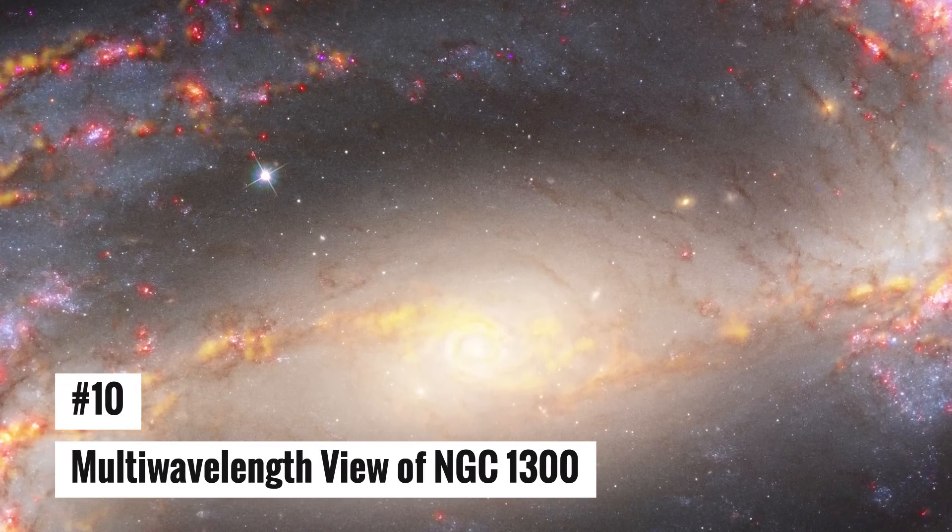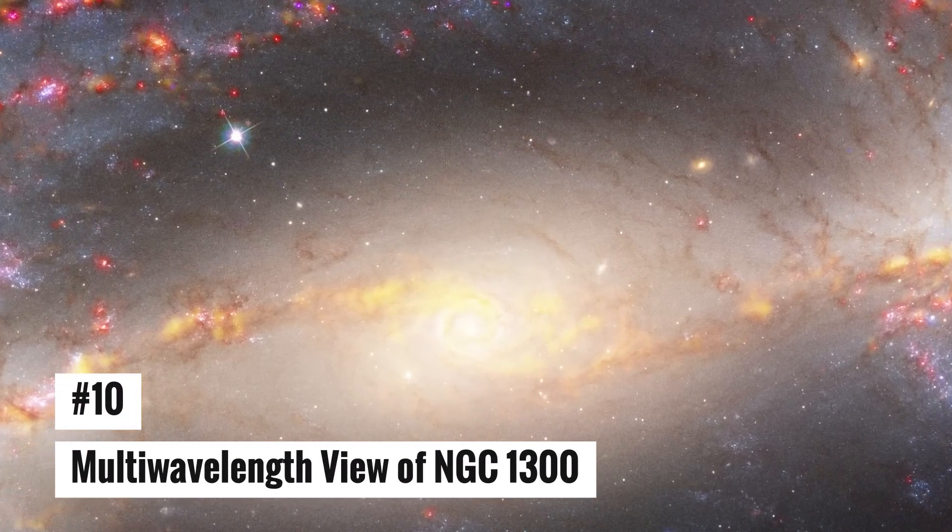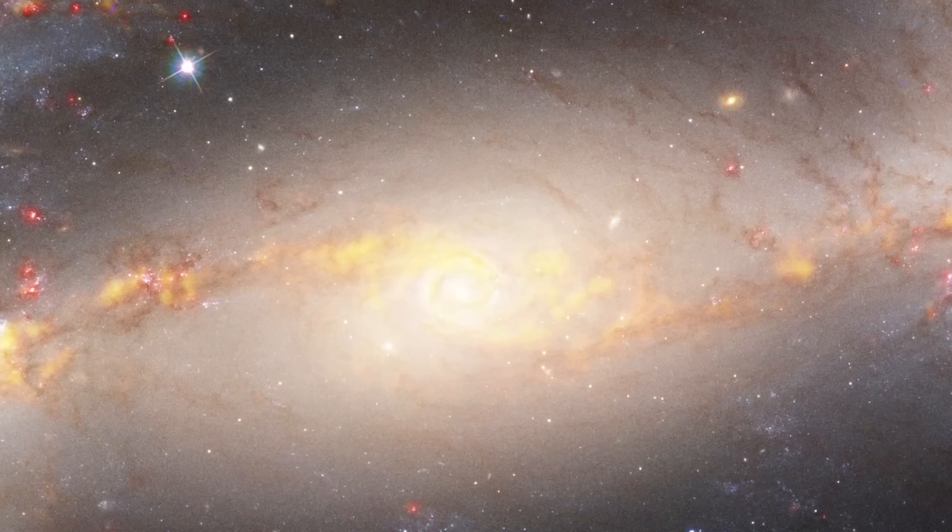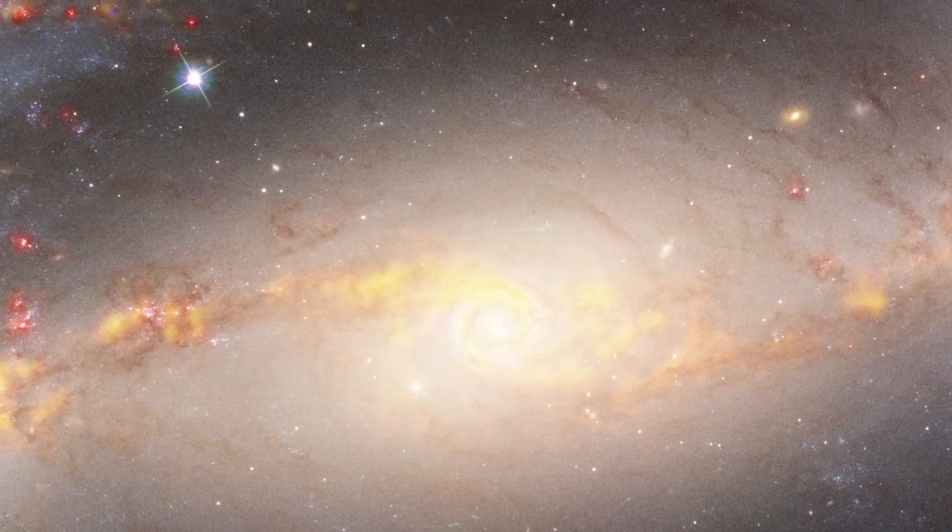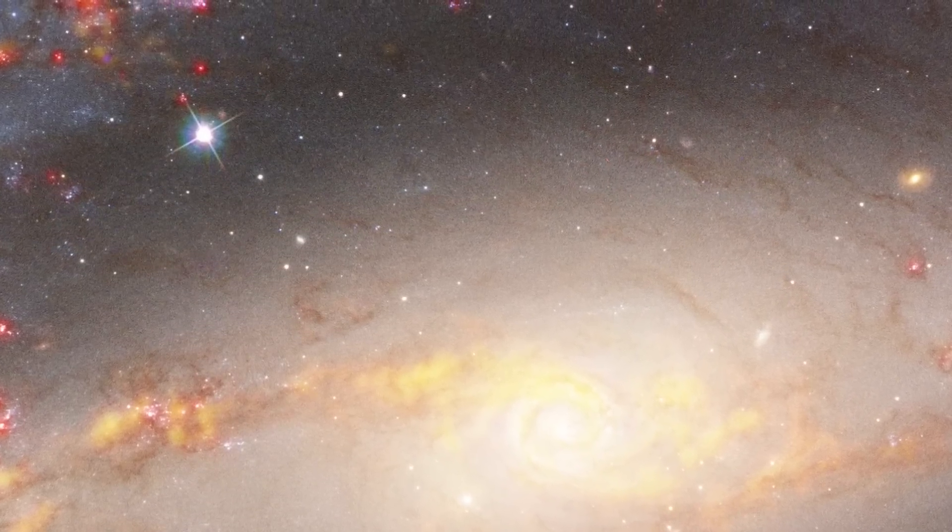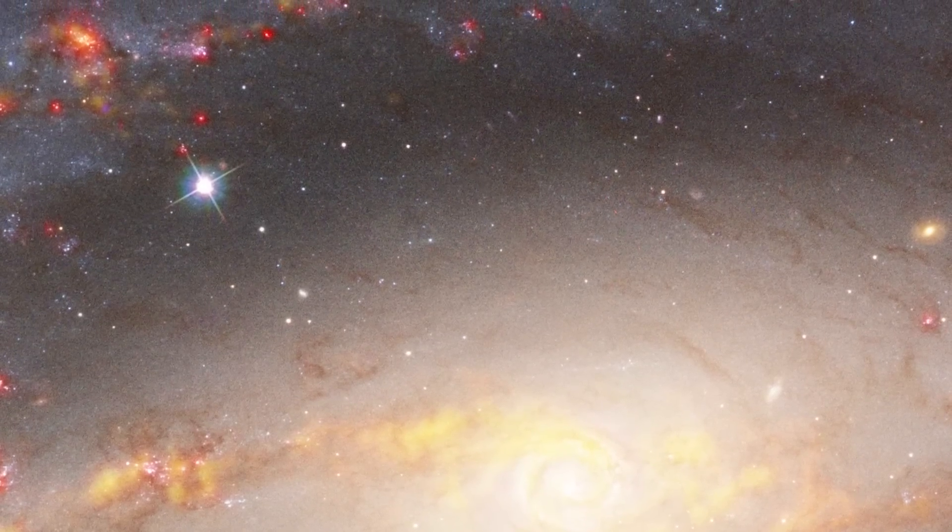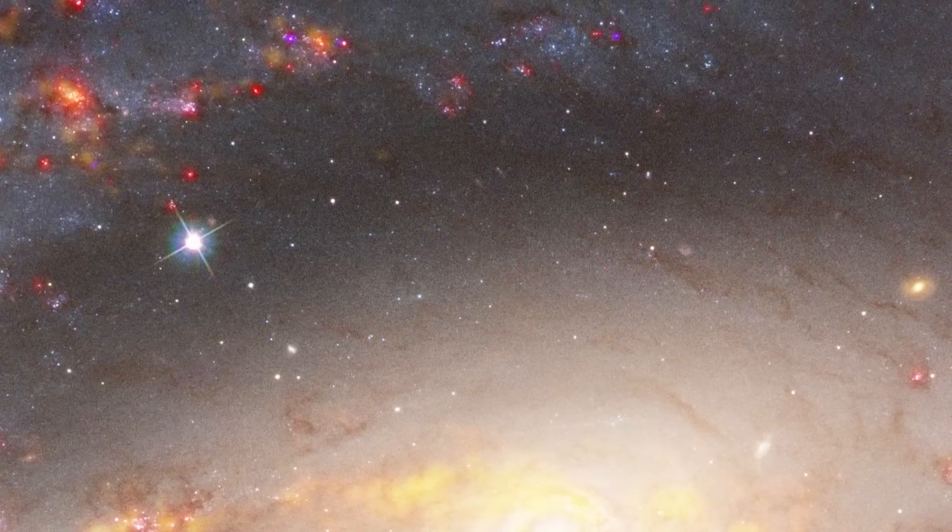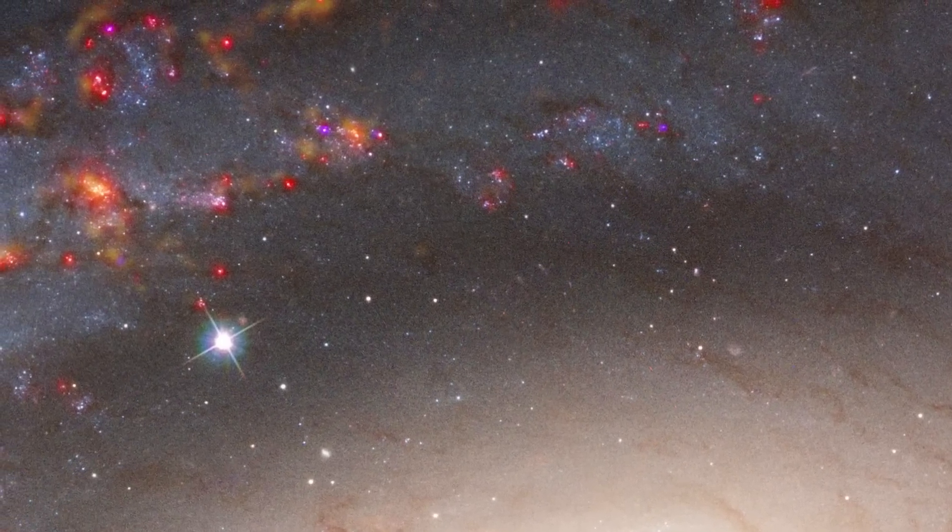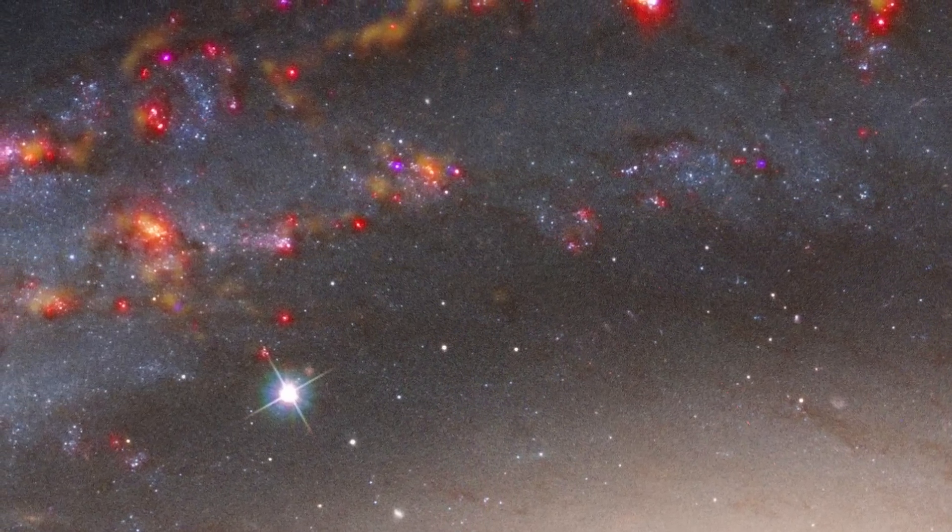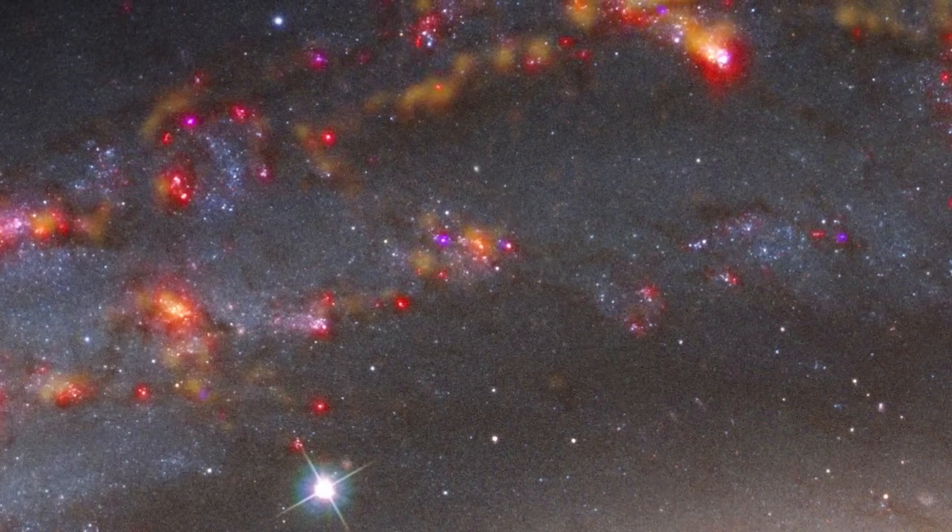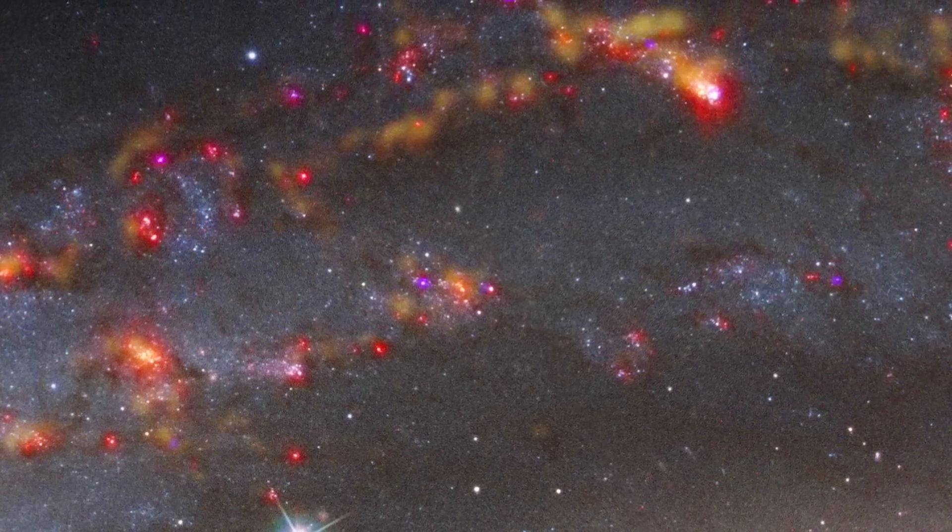Number 10: Multi-wavelength view of NGC-1300. Multiple observations are combined in the spiral galaxy NGC-1300 picture to depict star population and gas. The frigid molecular gas clouds that are the starting point for stars to develop are highlighted in yellow by radio light collected by the Atacama Large Millimeter Submillimeter Array. Red and magenta data from the Multi-Unit Spectroscope Explorer instrument on the Very Large Telescope show how young, massive stars affect the gas around them. The James Webb Space Telescope shows dust lanes in gold and very young blazing stars in blue in images taken in the visible and ultraviolet spectrum. Researchers will be able to locate star formation in this galaxy's earliest phases by using high-resolution infrared photos from the Webb Space Telescope.